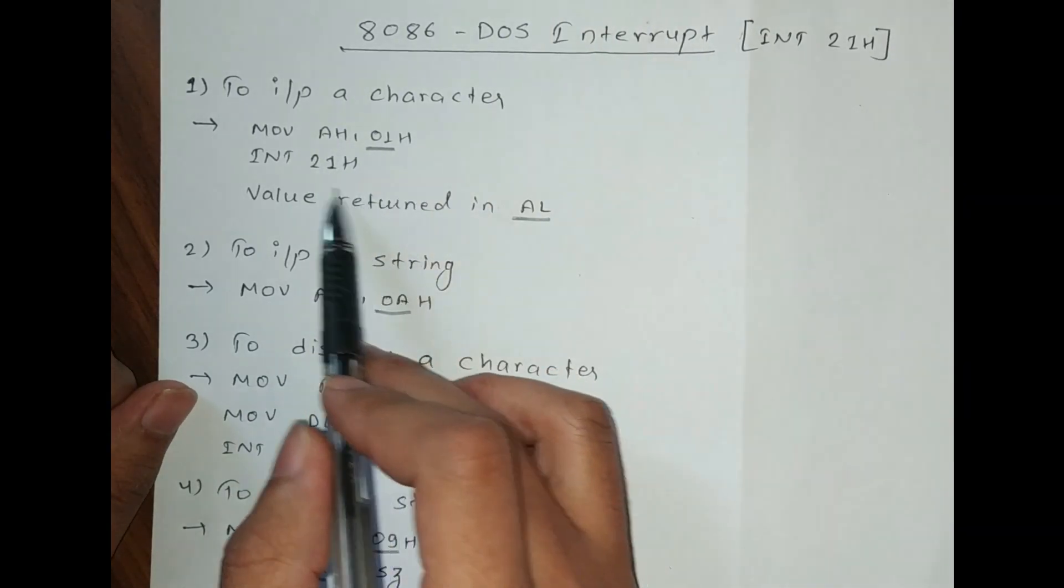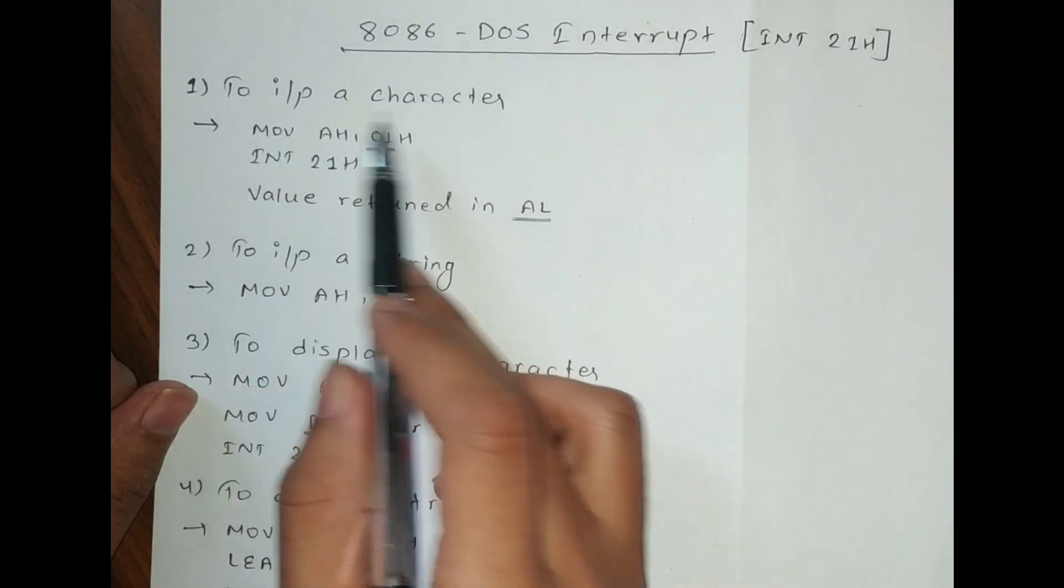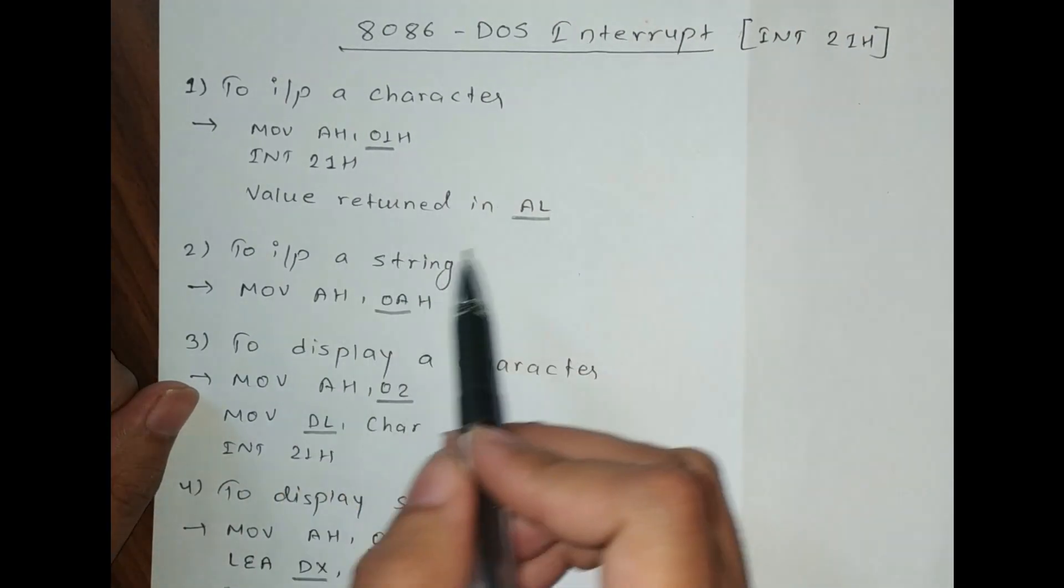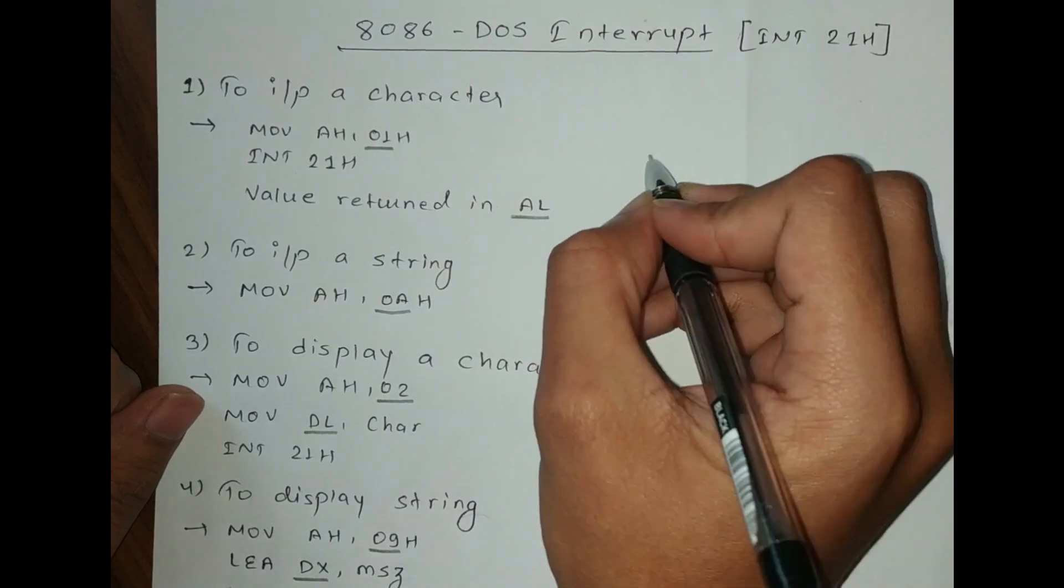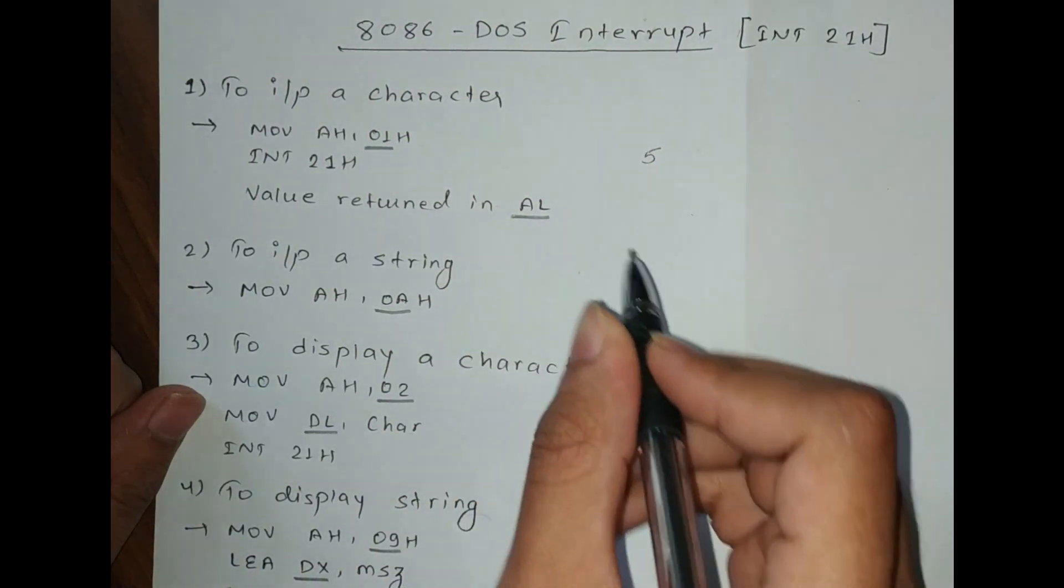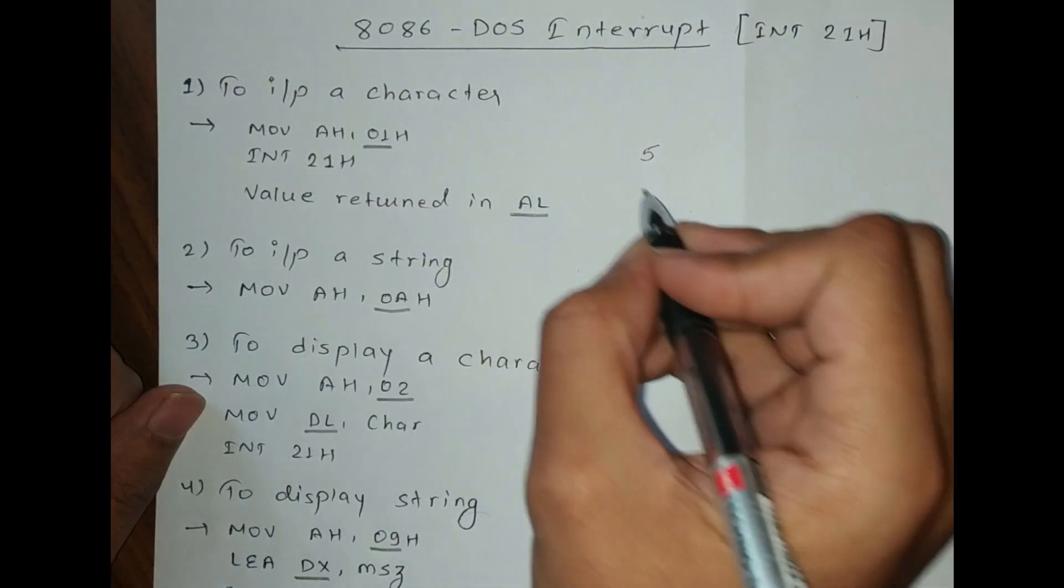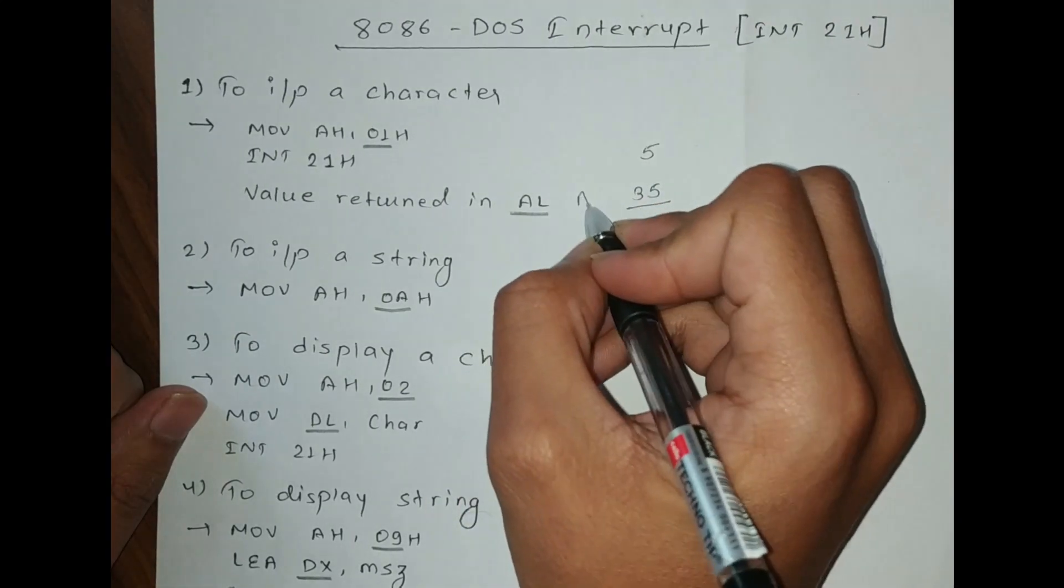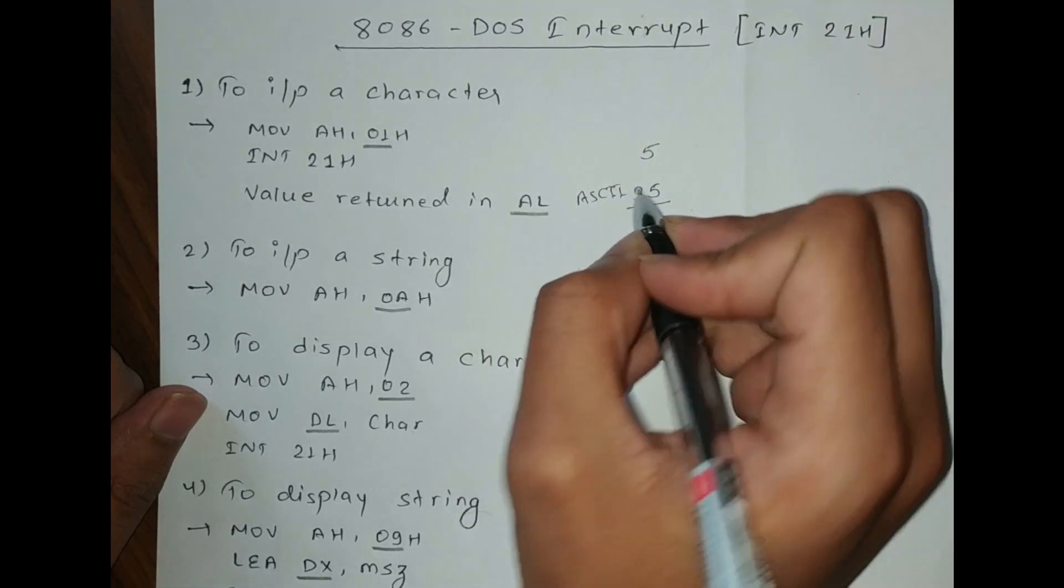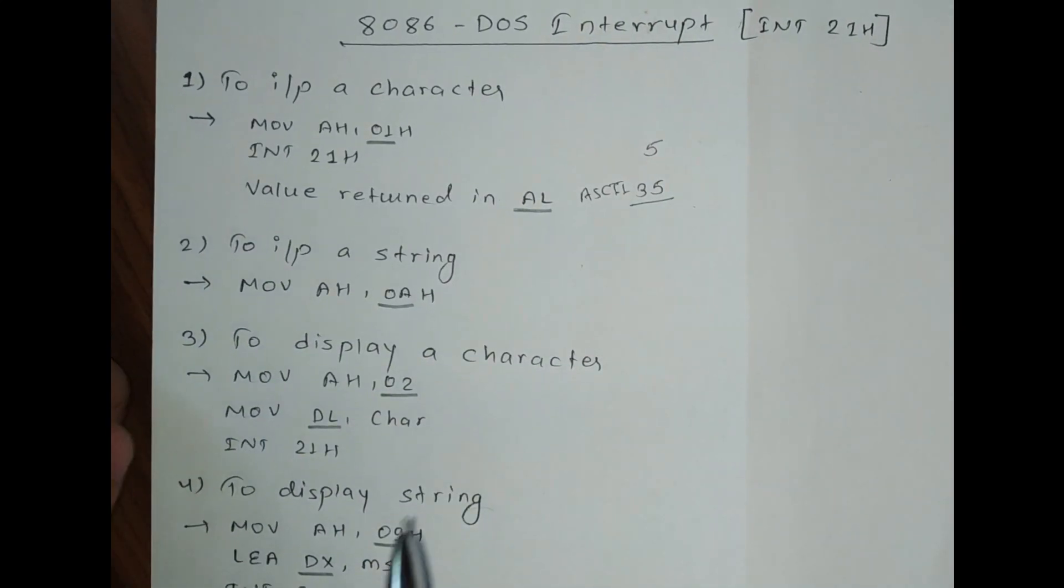If the AH register consists of 01H, then INT 21 will perform character input and the character will be returned in the AL register. Suppose you entered a 5, so the AL register consists the ASCII value of 5, that is 35 ASCII value. By doing programming, you have to understand about the ASCII value and how it is converted, but I will teach that in my coming video.